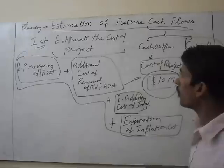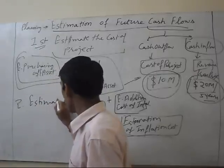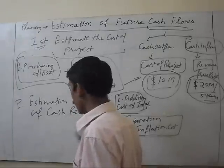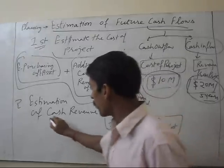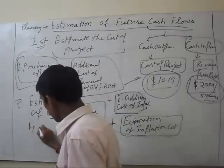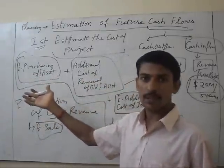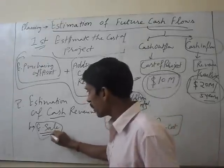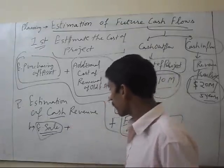Now we estimate the cash revenue — what total revenue we will receive in the form of cash. First, estimate sales. While we are purchasing a project for production and to increase sales, we estimate the total sales which we expect from that project.